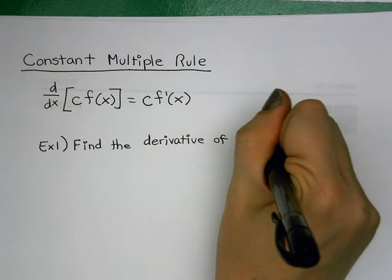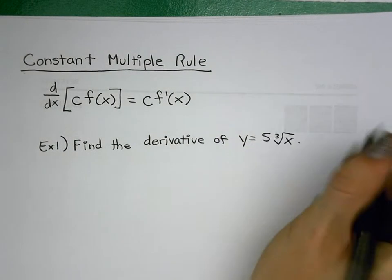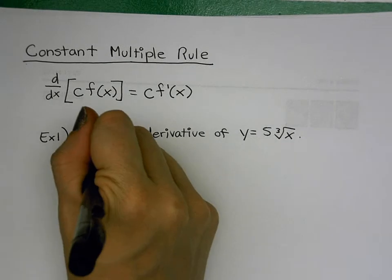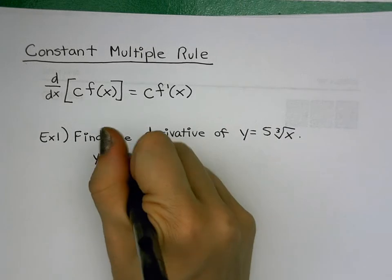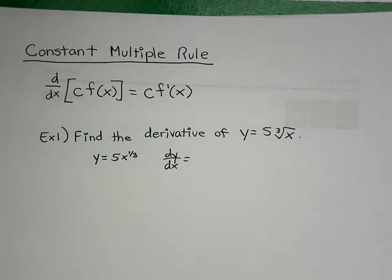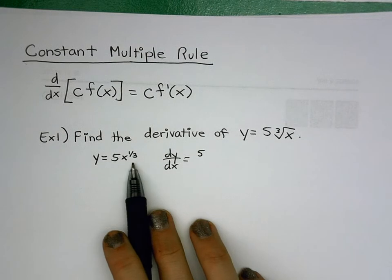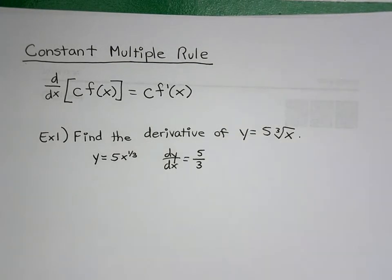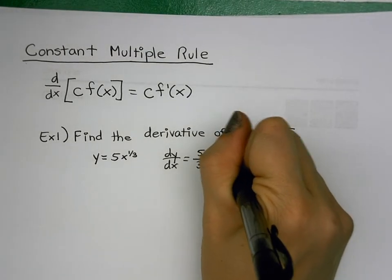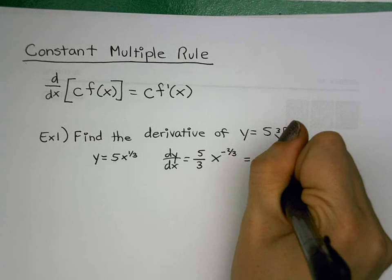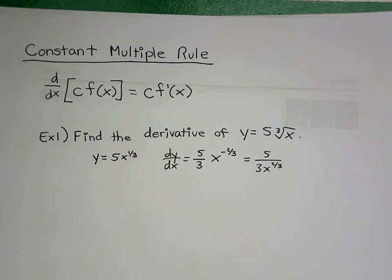Example one: find the derivative of y = 5 times the cube root of x. Cube root of x can't directly use power rule, so rewrite it as x to the one-third. The five is just a coefficient — it hangs out. Apply power rule on x^(1/3): bring the one-third down in front, leave the base alone, subtract one from the exponent. You could also rewrite the answer without a negative exponent.